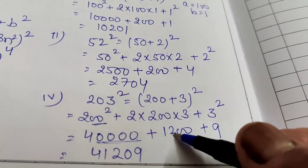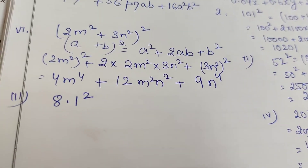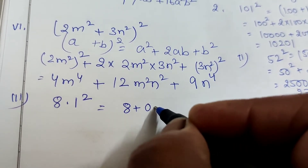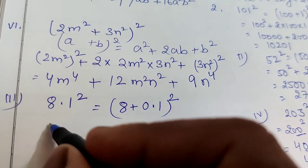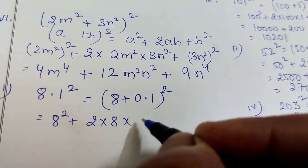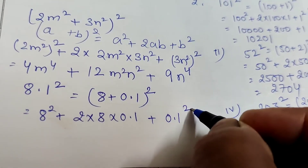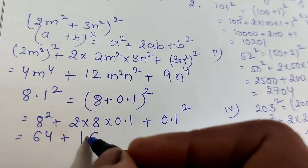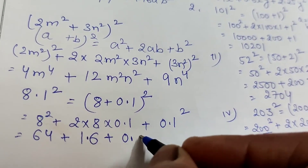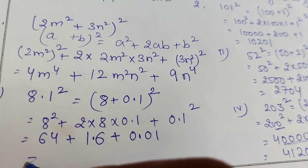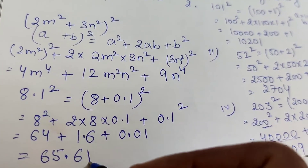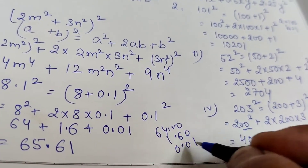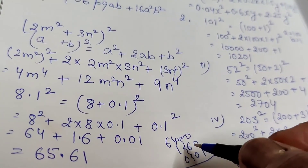The next one is 8.1². Write it as (8 + 0.1)². Square of first: 8² = 64. Two times product: 2 × 8 × 0.1 = 1.6. Square of second: 0.1² = 0.01. Adding decimals: 64.00 + 1.60 + 0.01 = 65.61.